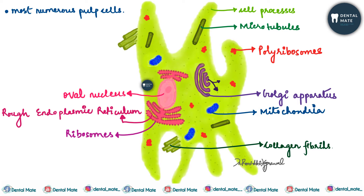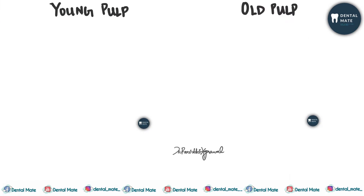The Golgi apparatus releases intermediate transfer vesicles or secretory granules. Depending on the age of the pulp, fibroblasts have different appearances.